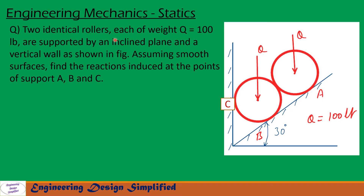Today's problem is: two identical rollers, each of weight Q equal to 100 lb, are supported by an inclined plane and a vertical wall as shown in the figure. Assuming smooth surfaces, find the reactions induced at the points of support A, B, and C.